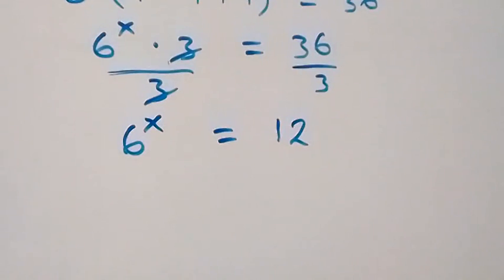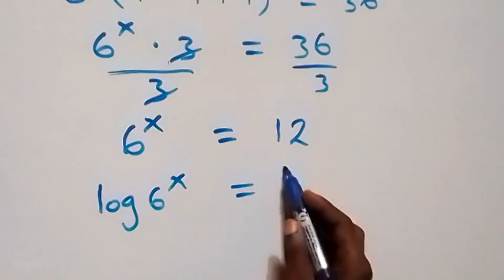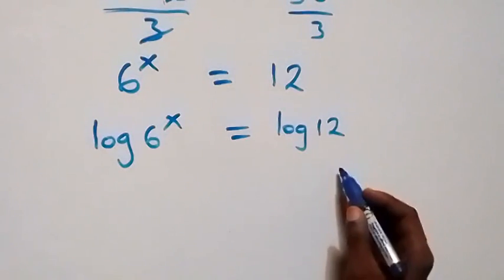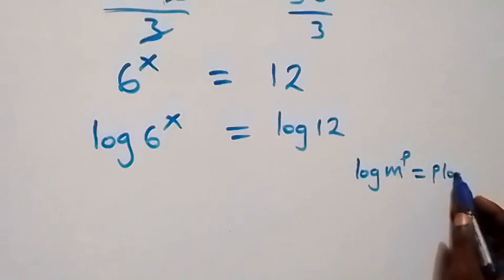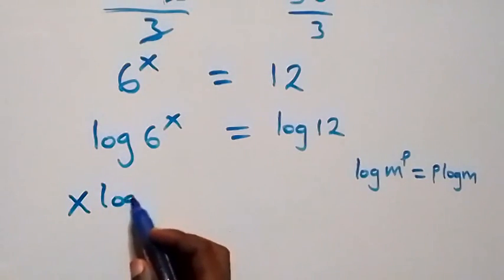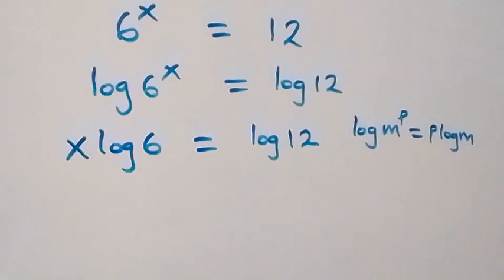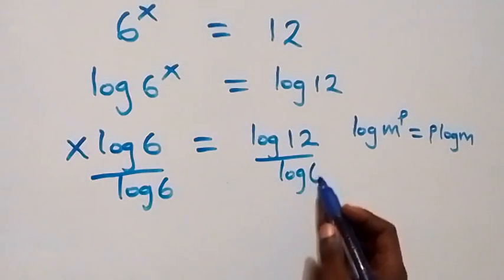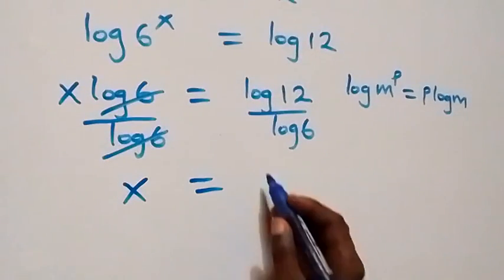In the next step, let's take the log on both sides. We have log of 6 raised to power x equals log 12. Applying the law of logarithms: log m raised to power p can be written as p·log m. So x comes down and this becomes x·log 6 equals log 12. Dividing both sides by log 6, the log 6 cancels and we are left with x equals log 12 over log 6.